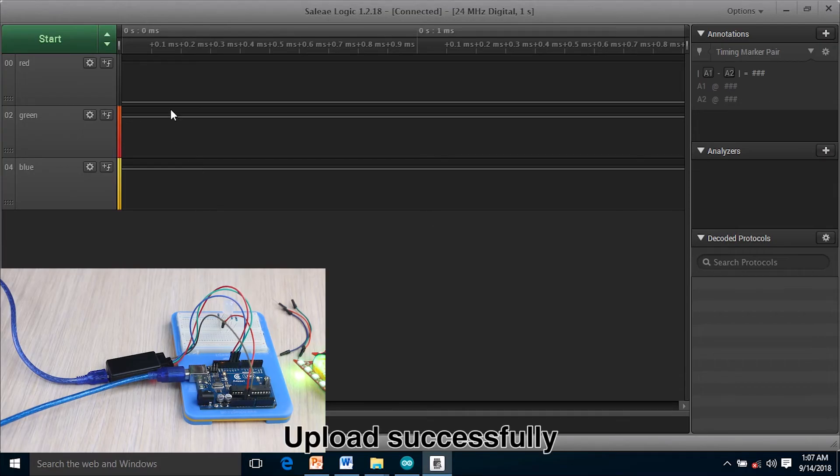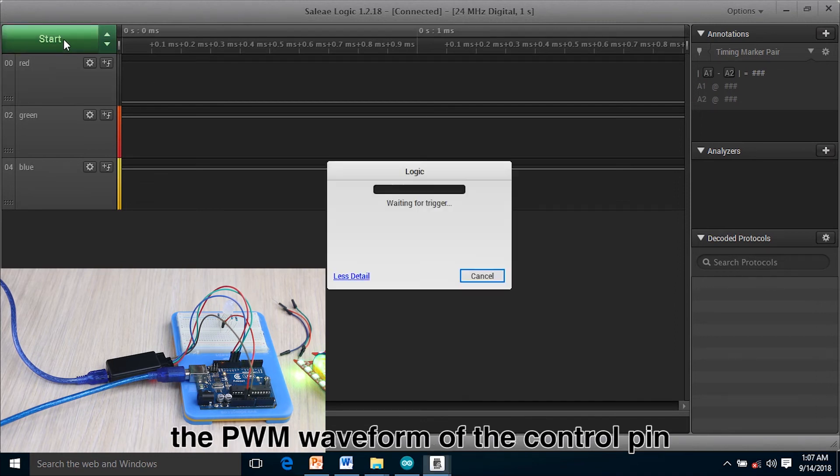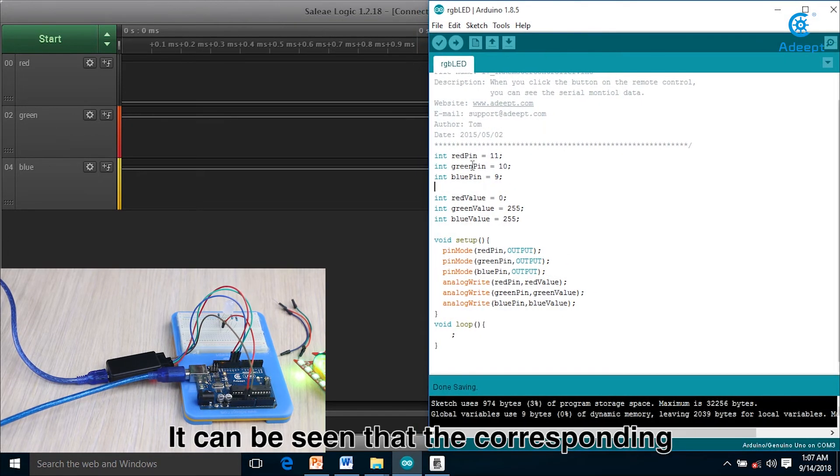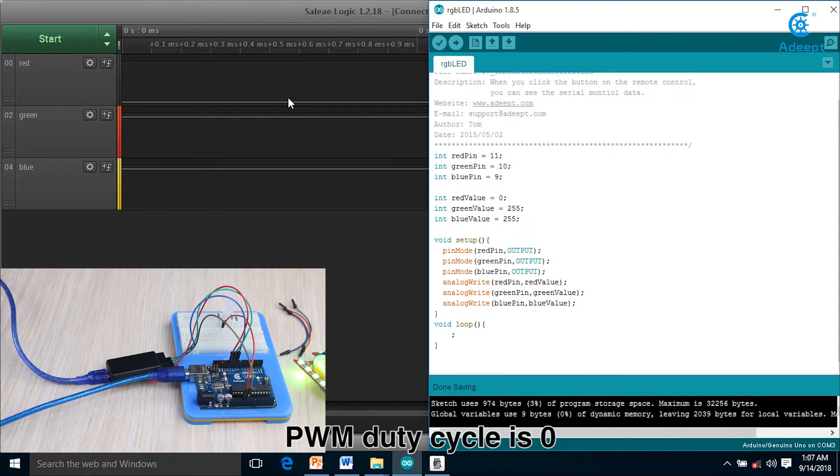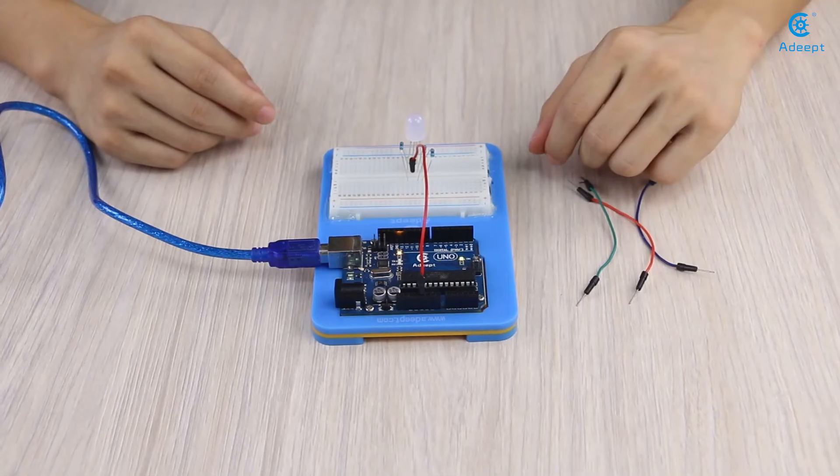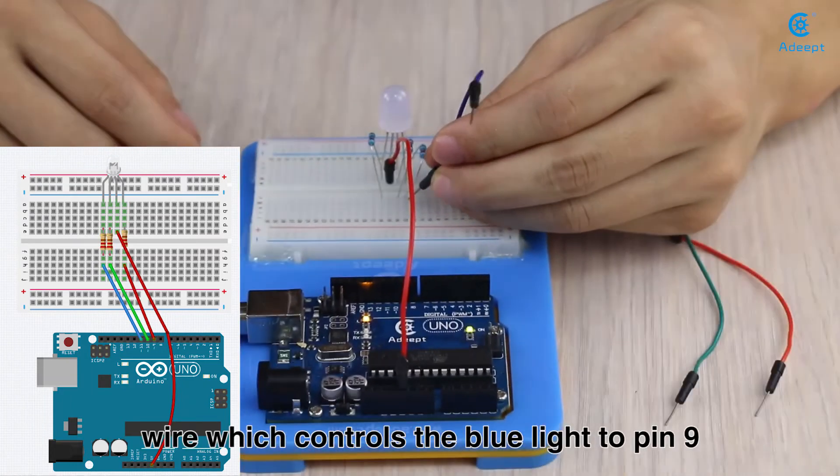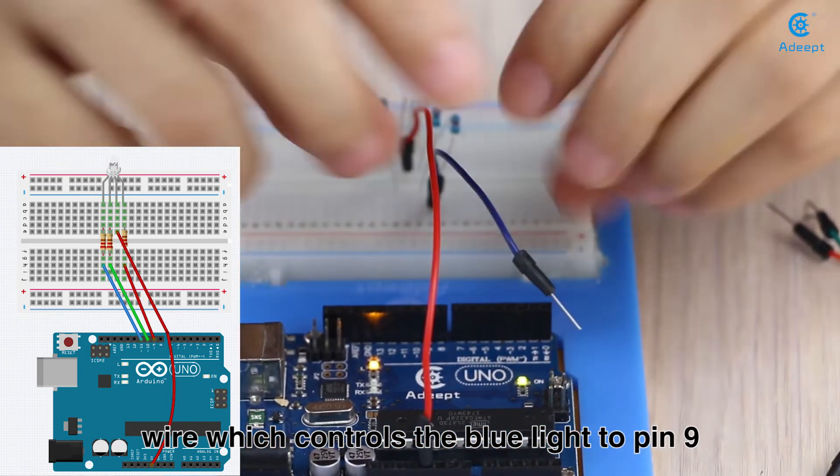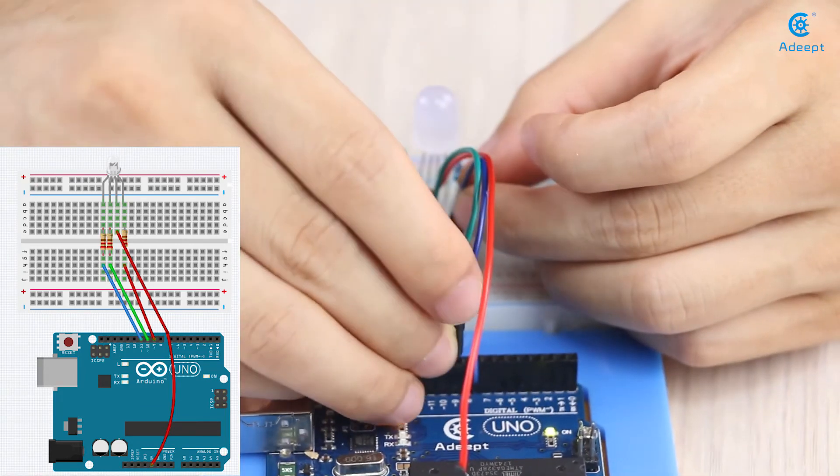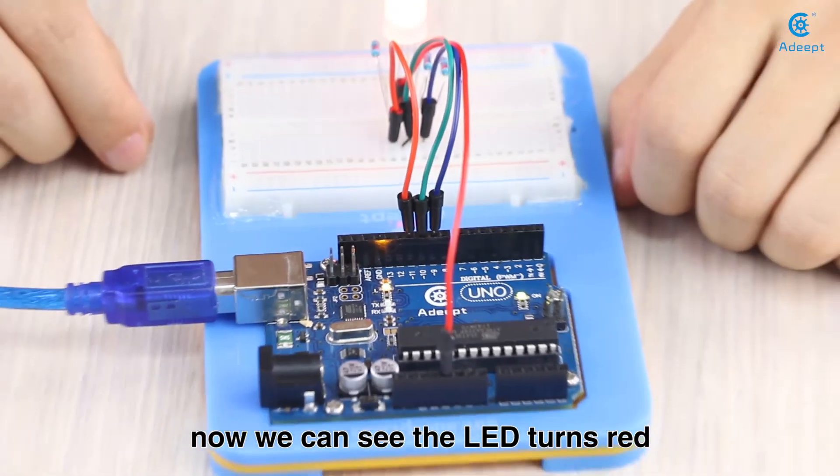Upload successfully, and we can use the logic analyzer to capture the PWM waveform on the control pin. It can be seen that the corresponding PWM duty cycle is 0 and the following is 100%. Now connect the DuPont wires to the corresponding pins. Wire which controls the blue light to pin 9, green light to pin 10, and red light to pin 11. Now we can see the LED turns red.